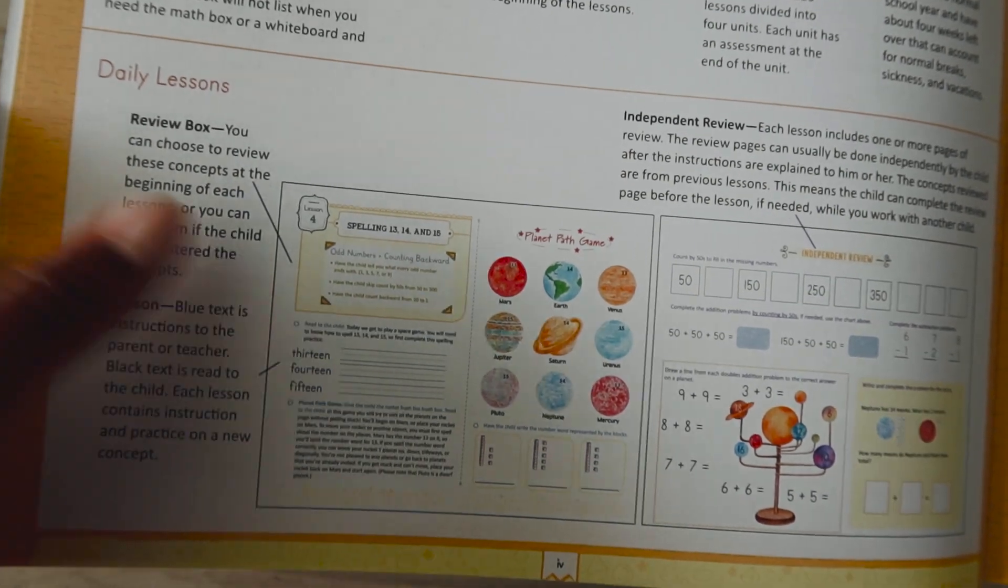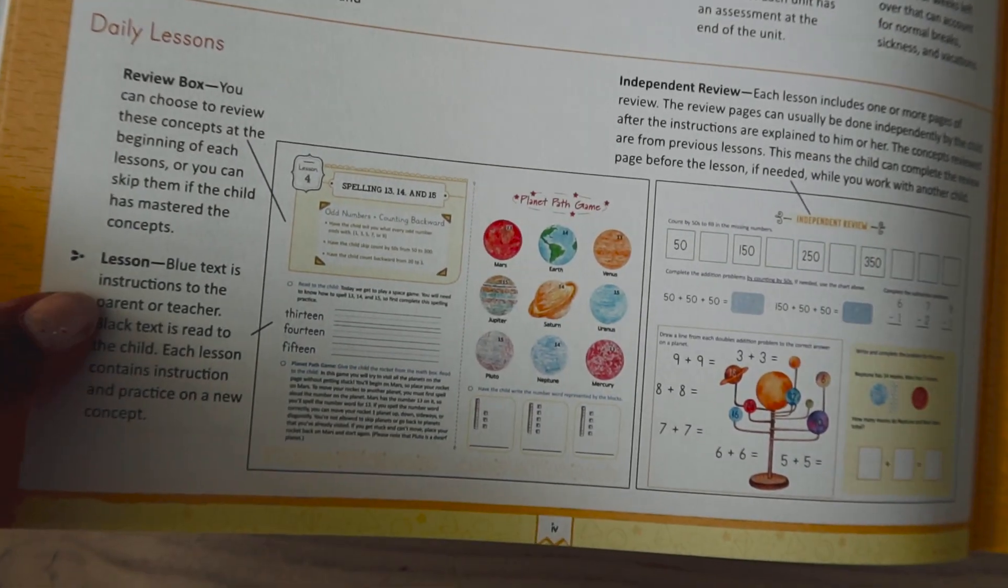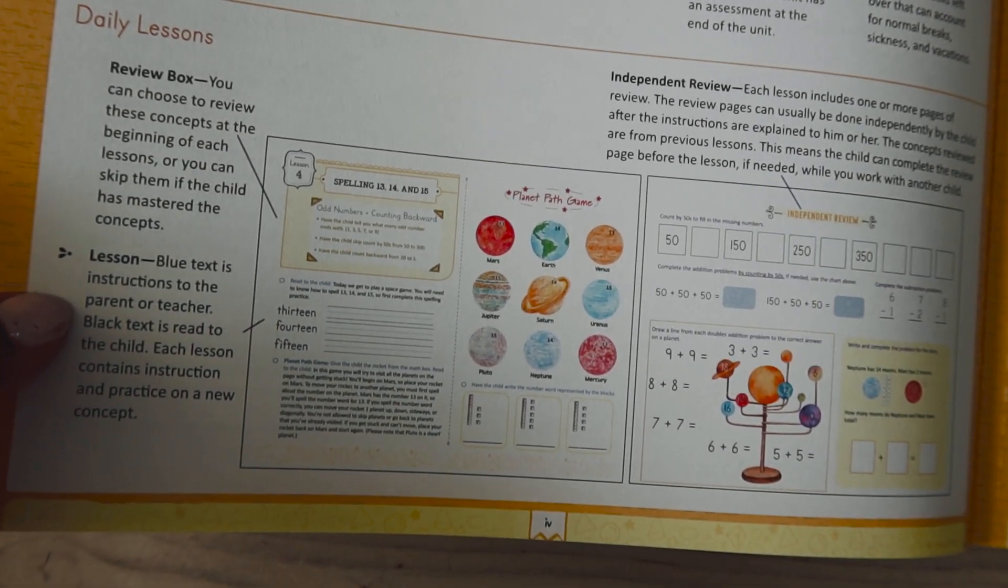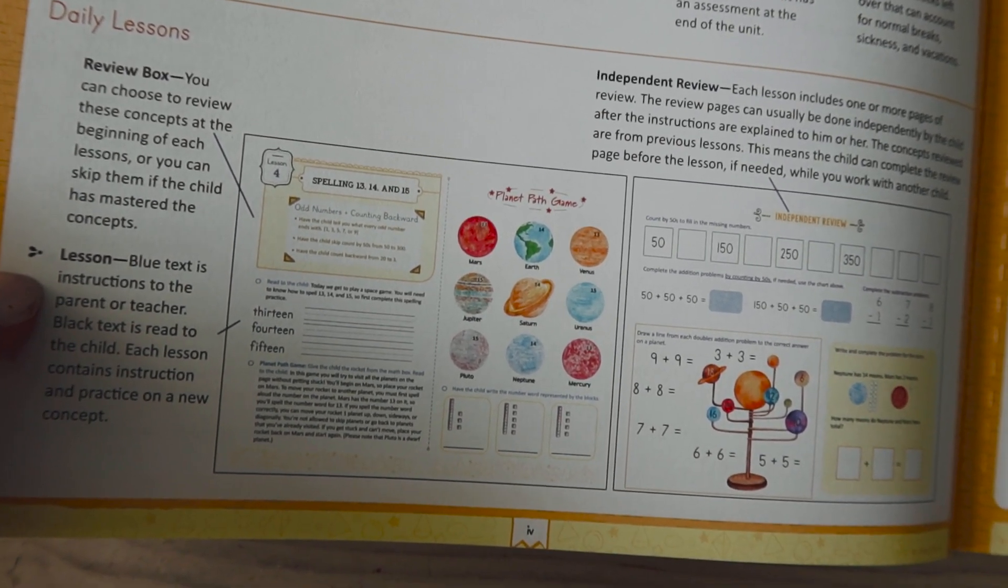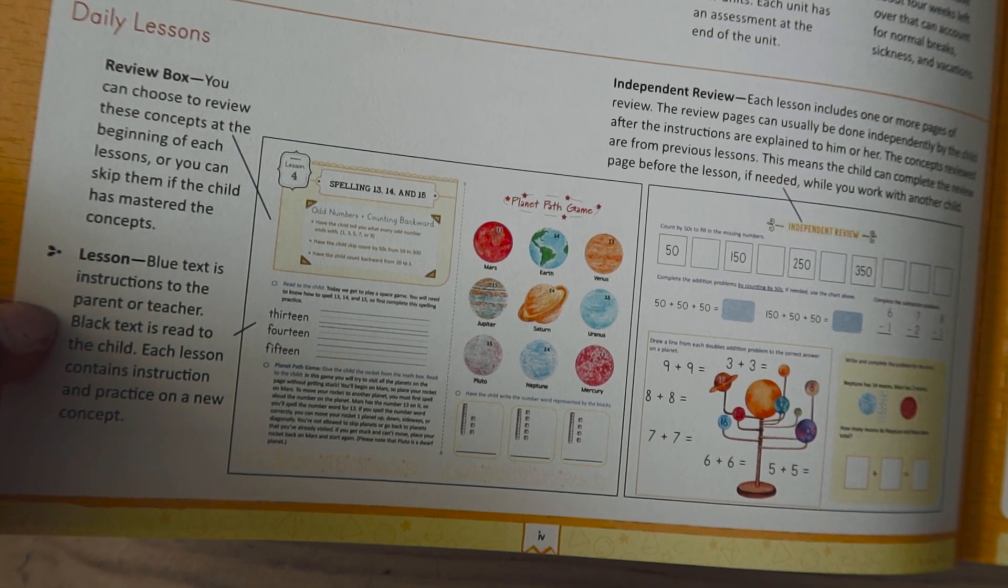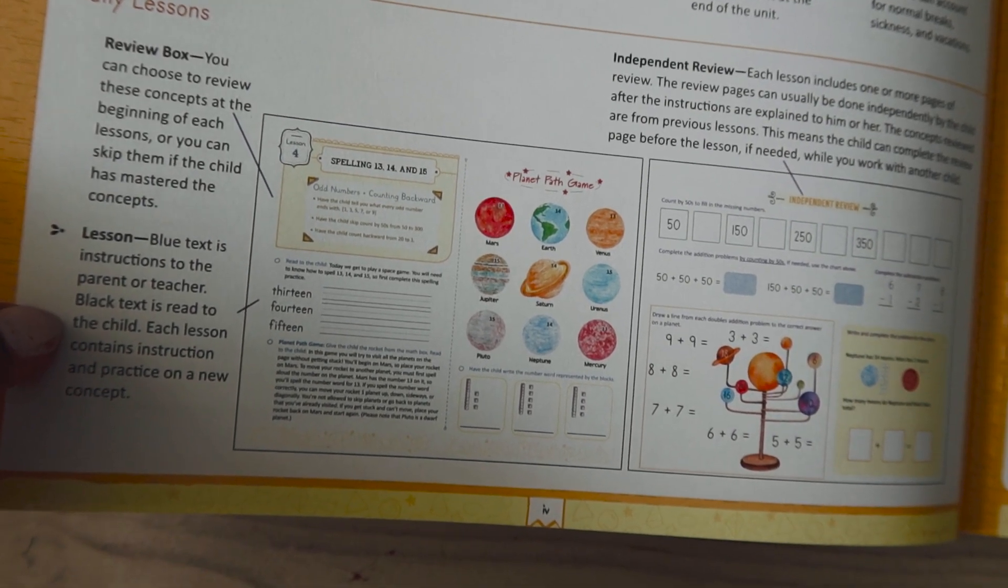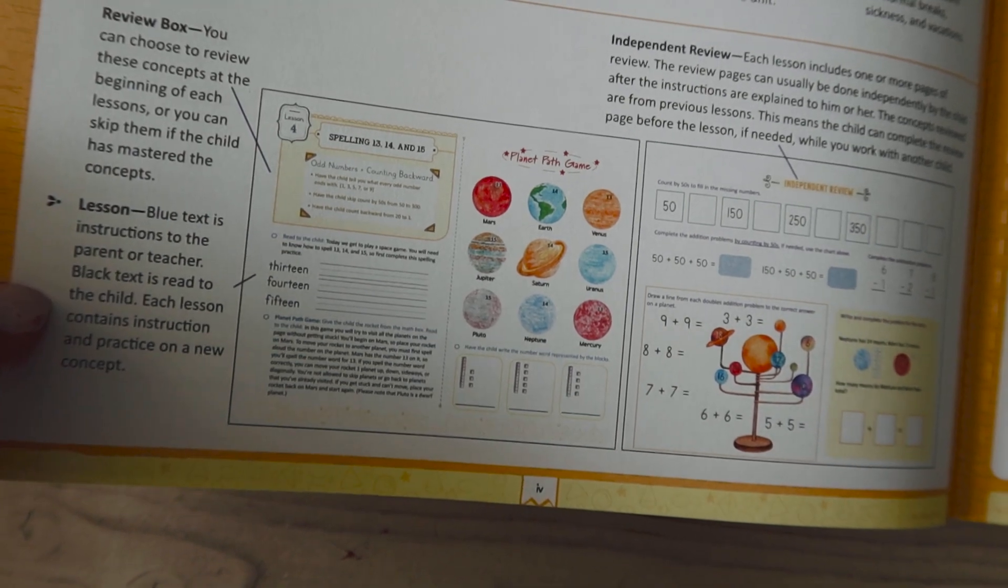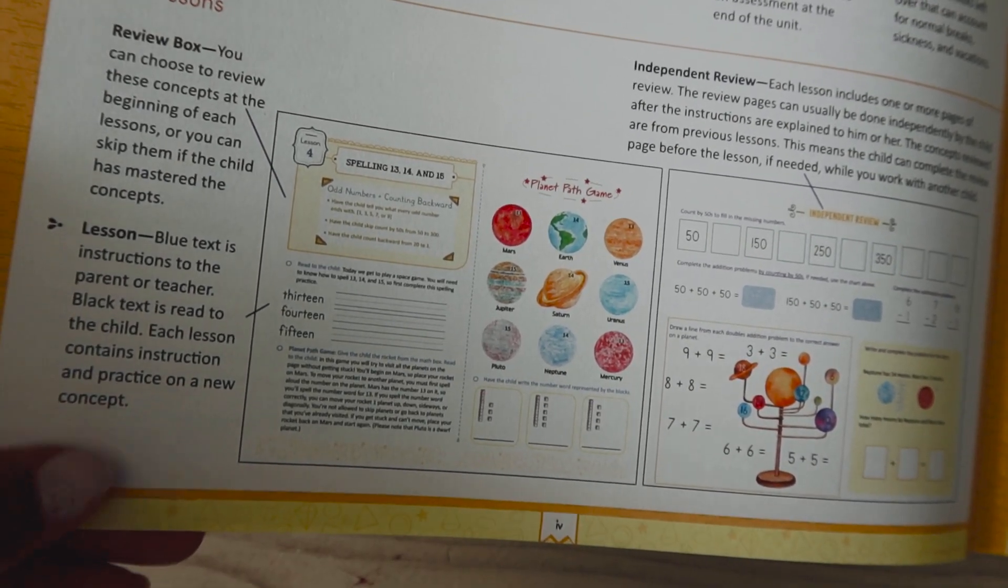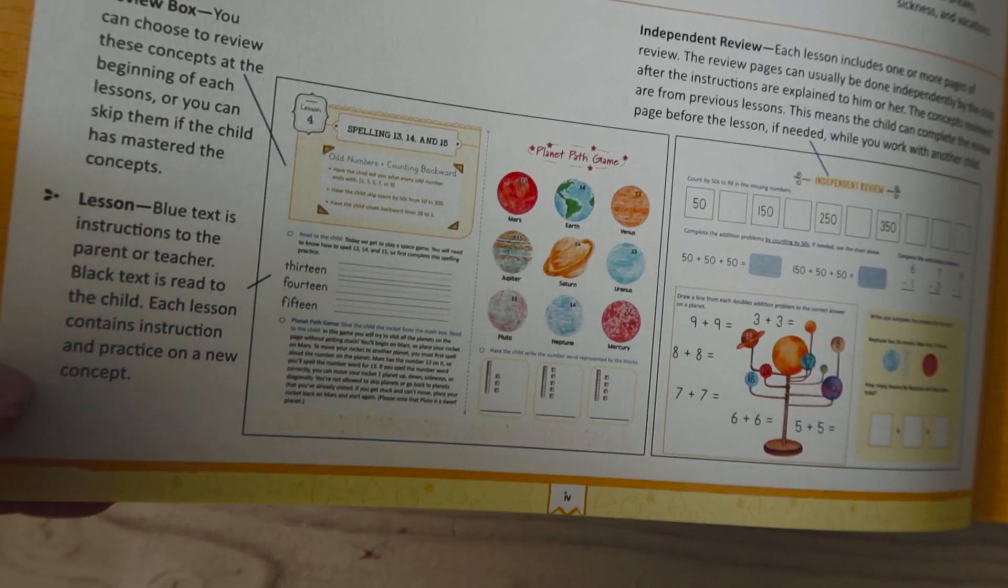It tells you about the lesson. So you have a review box here so that you can review all the concepts before starting the new lesson. If they've mastered it it tells you to skip it. And then the lesson is broken up into different colors. So whatever is in blue is for you as the parent or teacher to read and then the black is for you to read to your child.